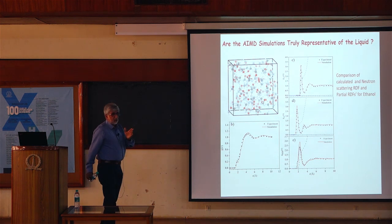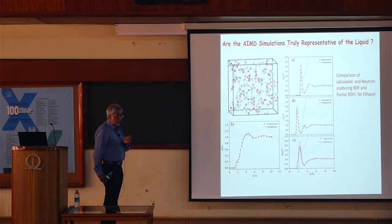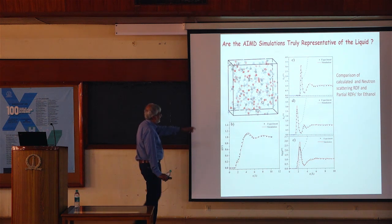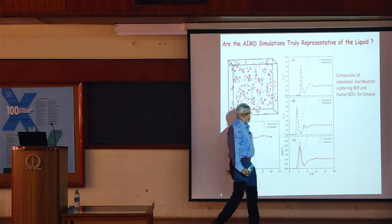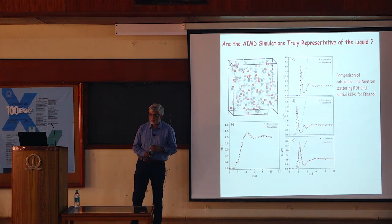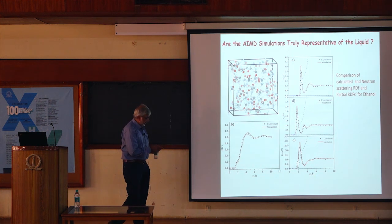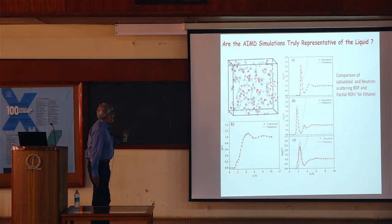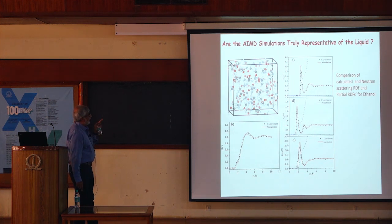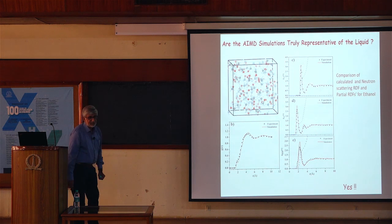The threshold values for R_OO or R_OHO are taken from the positions of the first minima in the radial distribution function. Unfortunately, the radial distribution functions involve isotropic averaging, so all angular information is lost. But the question is whether our ab initio simulations are truly representative of the liquid — a comparison shows good agreement, and the answer is clearly yes.